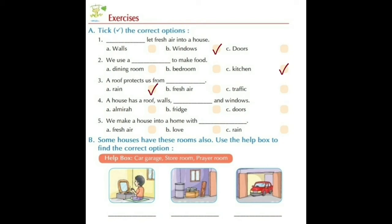Number four: A house has a roof, walls, blank, and windows. Option A: almirah, Option B: fridge, Option C: doors. The correct answer is Option C — doors. A house has a roof, walls, doors, and windows.